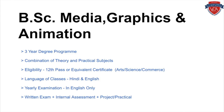The highlights of this program: it is a three-year degree program and a combination of theory and practical subjects. The eligibility to enter the program is a minimum of 12th pass or an equivalent certificate. You can come from any stream — art, science, and commerce students who have completed their 12th are all eligible. The language of class is Hindi and English, while the yearly examination is in English only. The program comprises written exams, internal assessment, and project practicals.